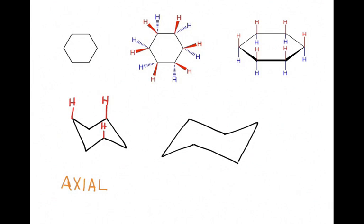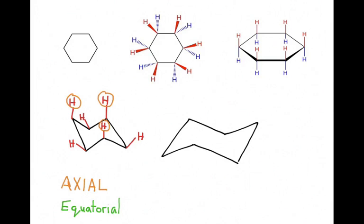The other set of hydrogens that are also going to be up are now not straight up but are angled. There are three red hydrogens that are up and angled. Those three hydrogens that we just drew are called equatorial. So if we circle the hydrogens in orange, here are my three axial hydrogens pointing straight up, and then in green, my three red hydrogens pointing up that are equatorial.